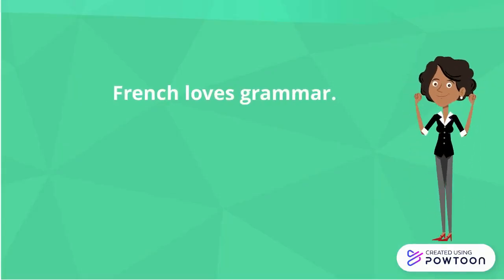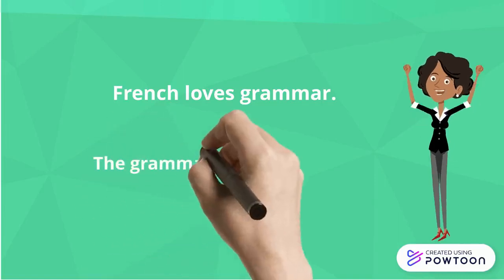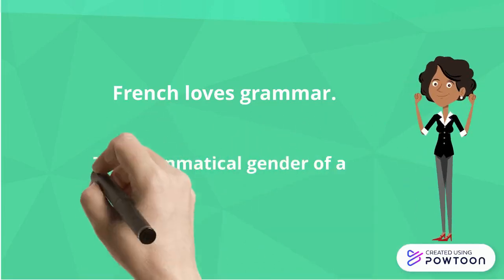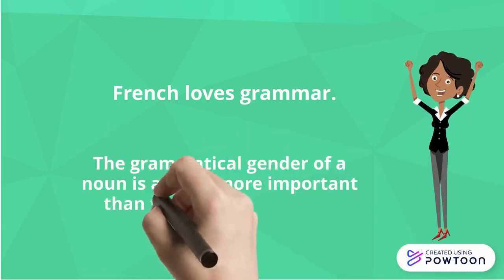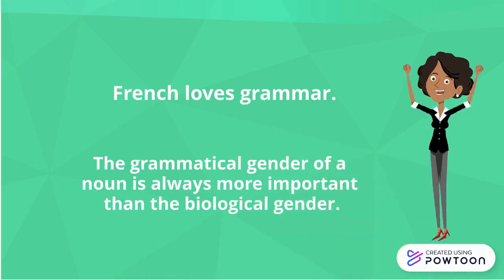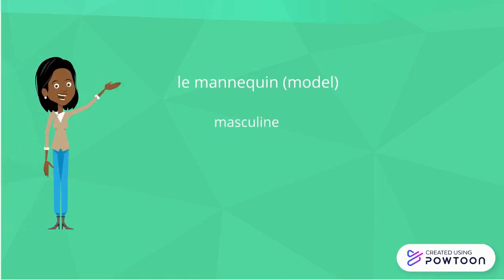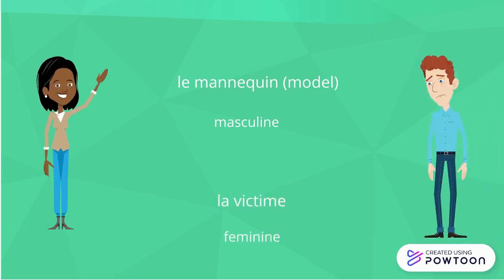French is a language that loves grammar. Consequently, the grammatical gender of a noun is always more important than the biological gender of the individual designated by this noun. For example, 'le mannequin' (model) is masculine even when the model is a woman. 'La victime' is feminine even when the victim is a man.